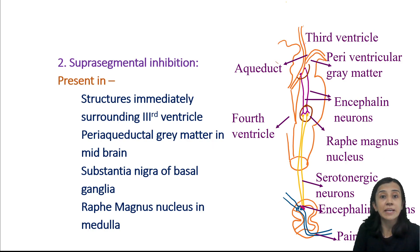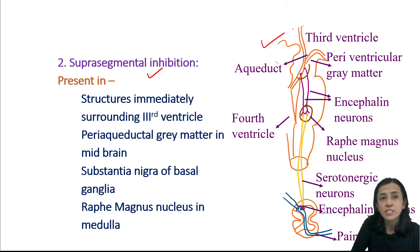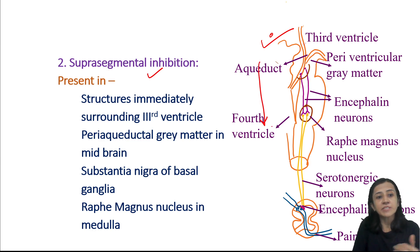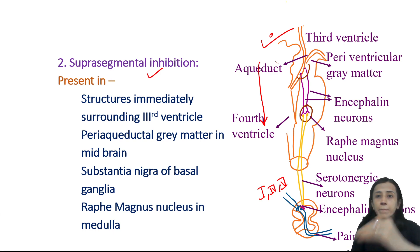Now, supraspinal inhibition — above the spinal cord there is a system that inhibits pain. Analgesia is produced by descending inhibitory fibers acting on the dorsal horn at laminae 1, 4, and 5, inhibiting pain transmission. Structures involved in supraspinal inhibition include: structures immediately surrounding the third ventricle, the periaqueductal gray matter in the midbrain, substantia nigra in the basal ganglia, and the raphe magnus nucleus in the lower brainstem.